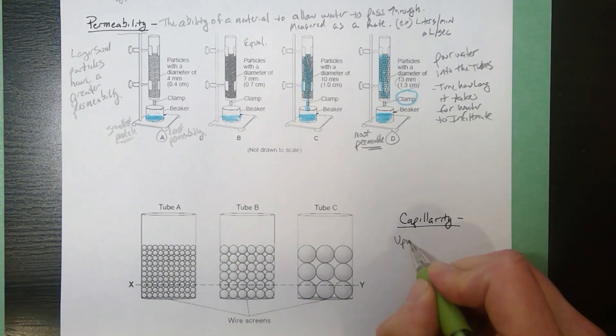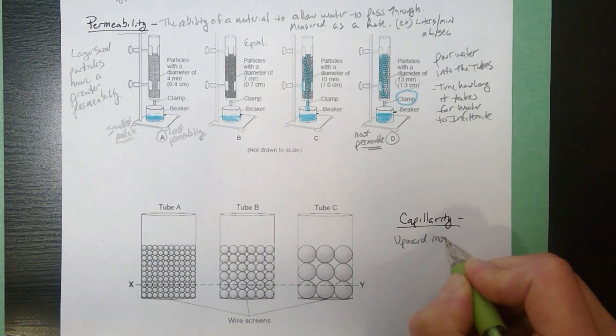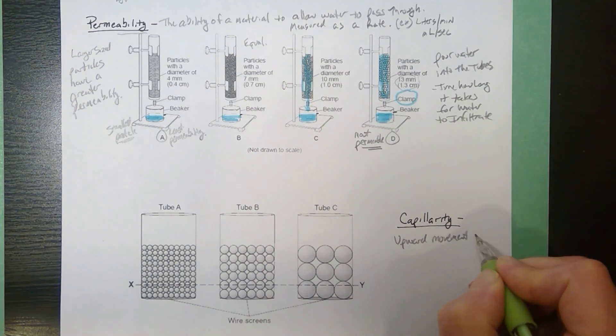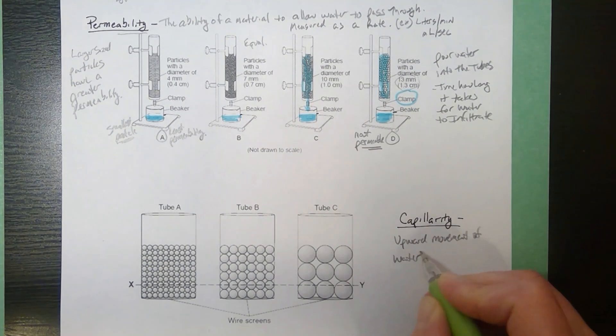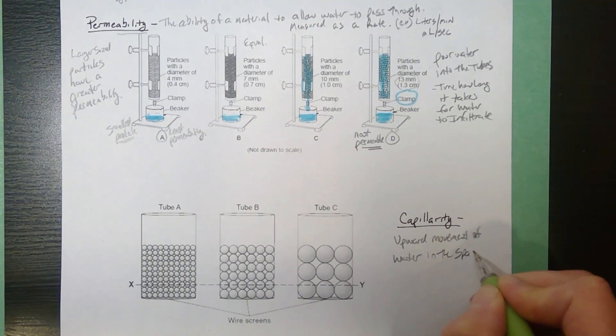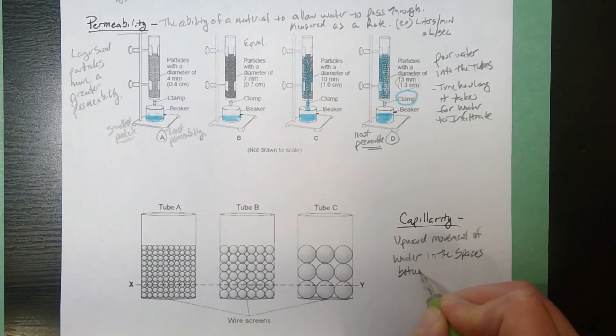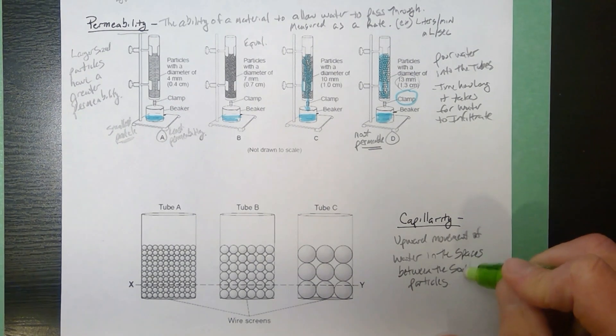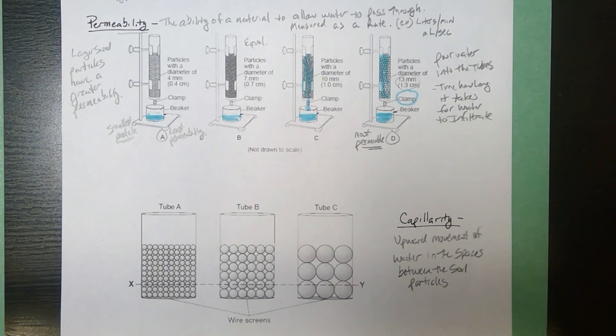To demonstrate capillarity, what we want to see is we're going to look for the upward movement of water in the spaces between the soil particles. So water can actually be drawn upwards by capillarity, sometimes called capillary action, in the spaces between the particles. It's similar to getting a meniscus.